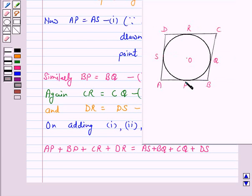Now, AP plus BP is AB and CR plus DR is equal to CD